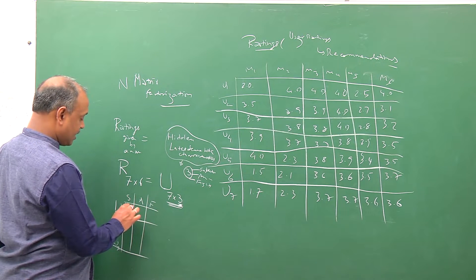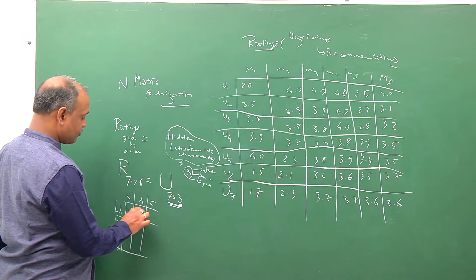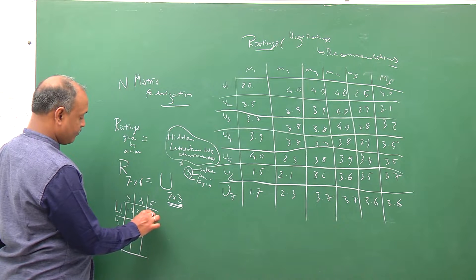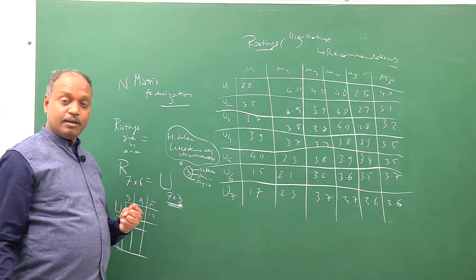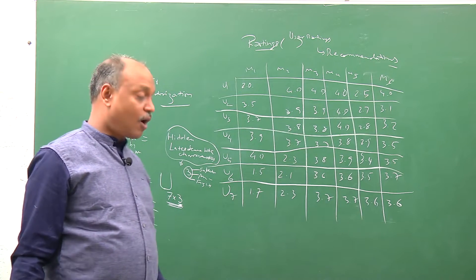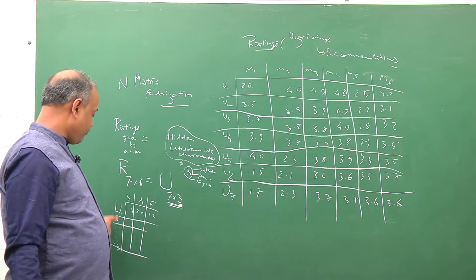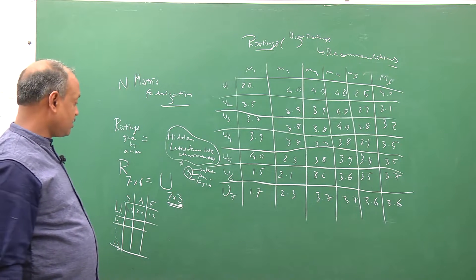So what happens is this represents the relative measure of how much of these characteristics the individual user likes.